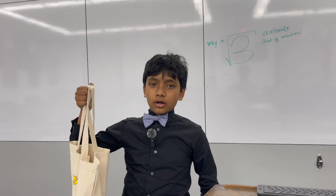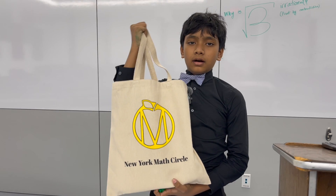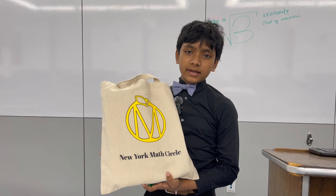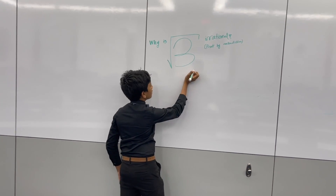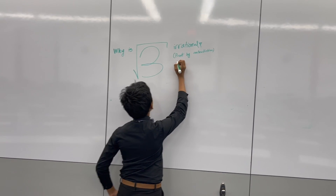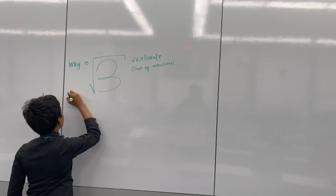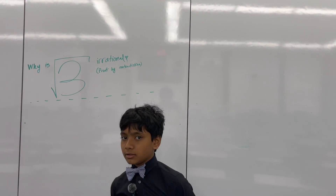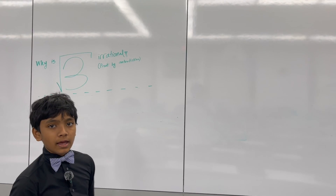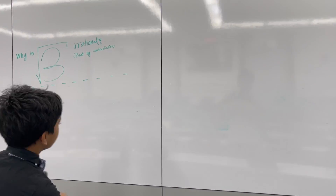Today I learned more advanced proof by contradiction. I first wanted to talk about this bag — my great teacher, Dr. Kovan Pillai, gave this to me. In class, we learned advanced proof by contradiction, and with that, I'm going to be showing you why root 3 is irrational, and this is a geometric proof.